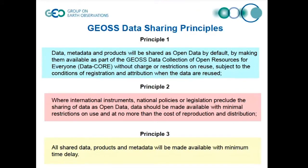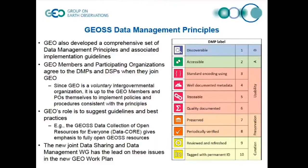Principle two also emphasizes the need for minimizing those restrictions and limiting the cost of reproduction and distribution. And finally, the third principle, which carried over from the first set, was that minimum time delay was important — that getting data out quickly, not necessarily reserving time for a scientific publication, for example, was important.